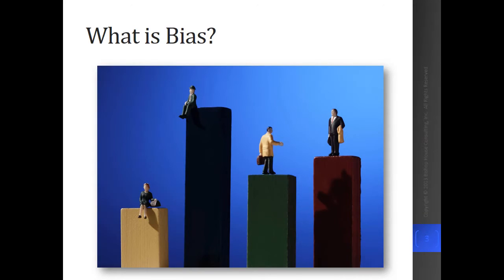So what is a bias? We're all human. Our thoughts on people are driven by our past interactions, their behavior, and a variety of feedback we receive, and these influence how we see others. Reality is we all have biases, but our objective is to understand these different types of biases and the biases that we might be prone to, so that we don't act on them.